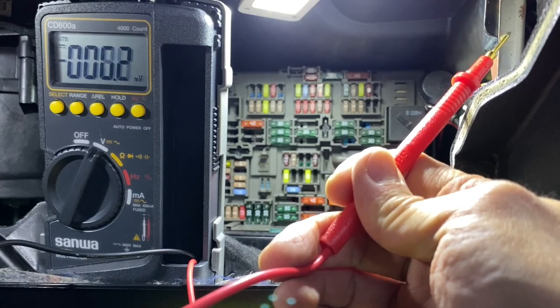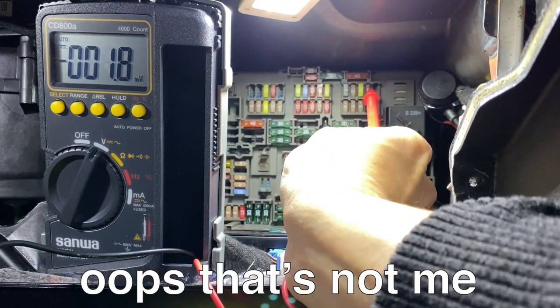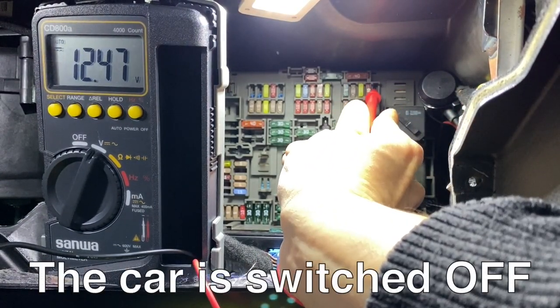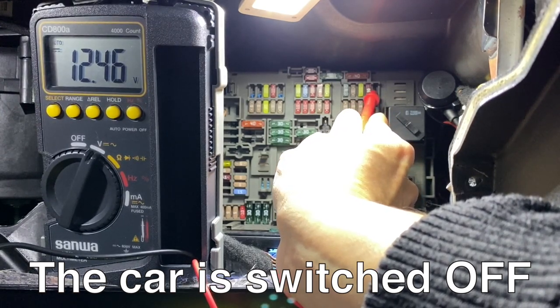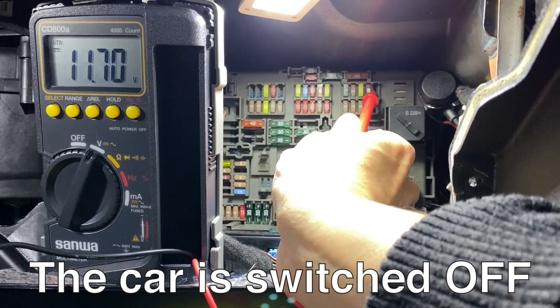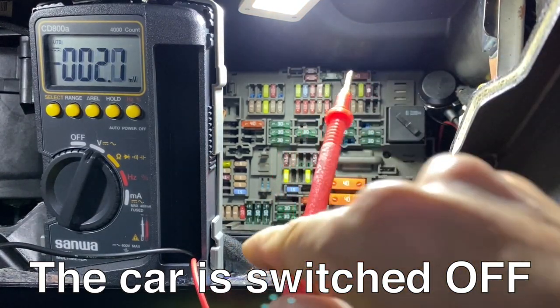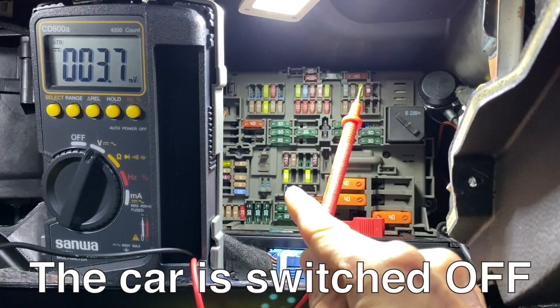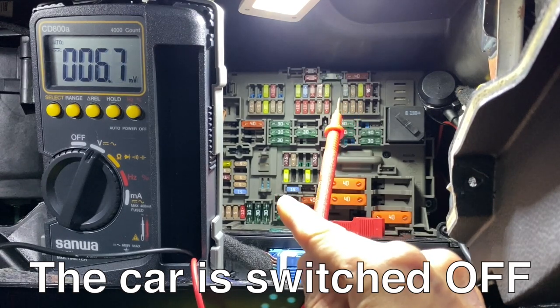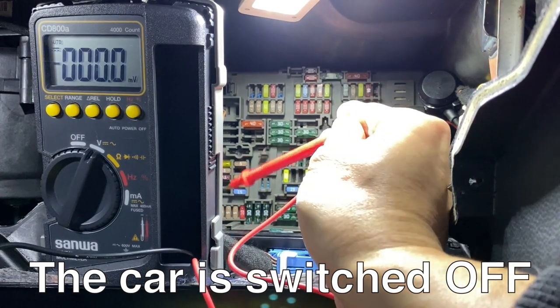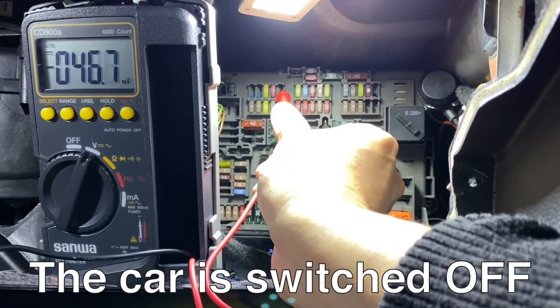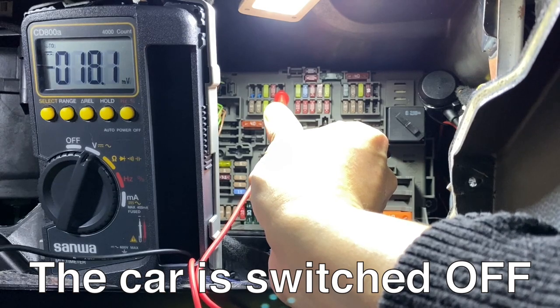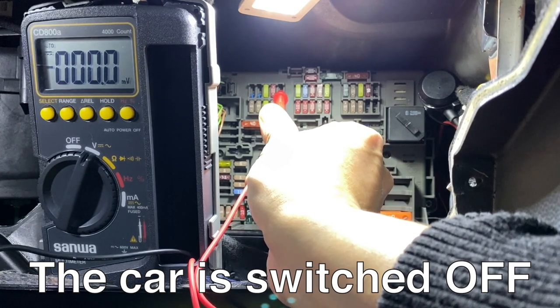And the red probe, we just touch any fuse slots we are interested in. But now, if I touch here, fuse 25, it shows 12V. That means fuse 25 on this fuse box is providing power. The fuse number 5 on E90, now there's nearly 0V. It is not providing any power. The car is switched off right now.